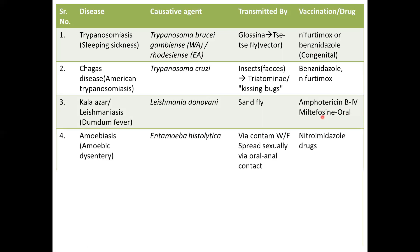Next is amoebiasis, also called amoebic dysentery. It is usually found in travelers because it is spread via contaminated food or water containing the protozoan Entamoeba histolytica. It can also be spread sexually through oral-anal contact. The drug used to cure it is nitroimidazole.